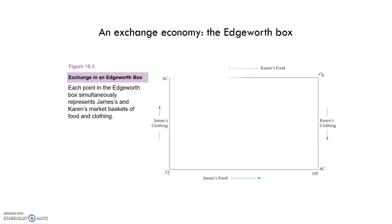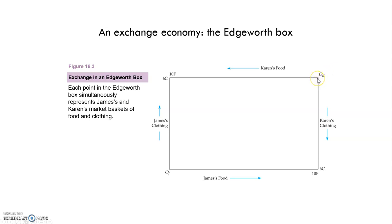The horizontal axis describes the number of units of food, and the vertical axis describes the number of units of clothing. Karen has her origin on one side, and James has his origin on the opposite side of the box. The units of food for Karen go from 0 to 10, and clothing from 0 to 6, and just the opposite for James — they divide the food and clothing between them.